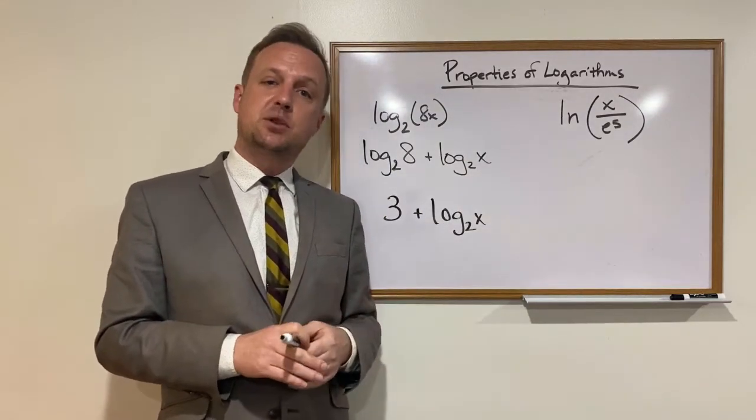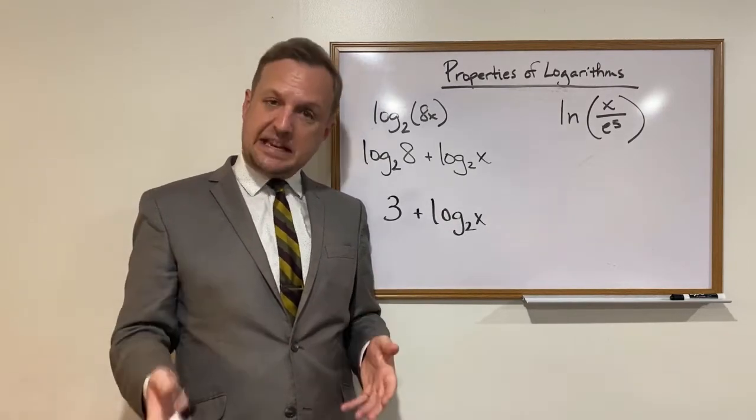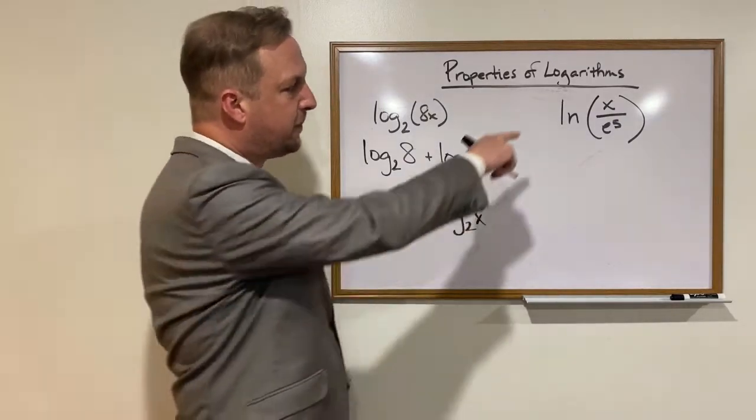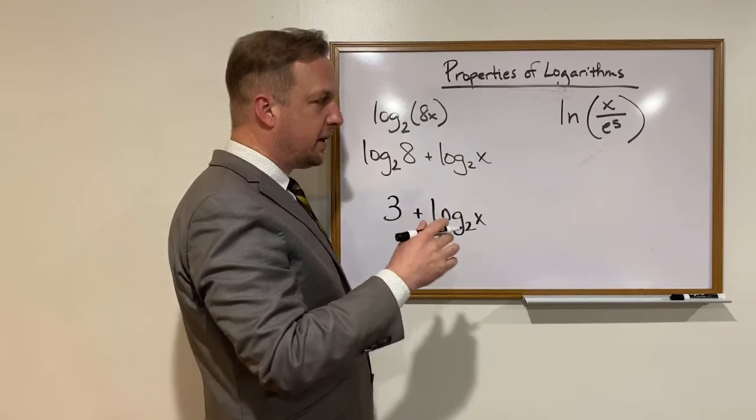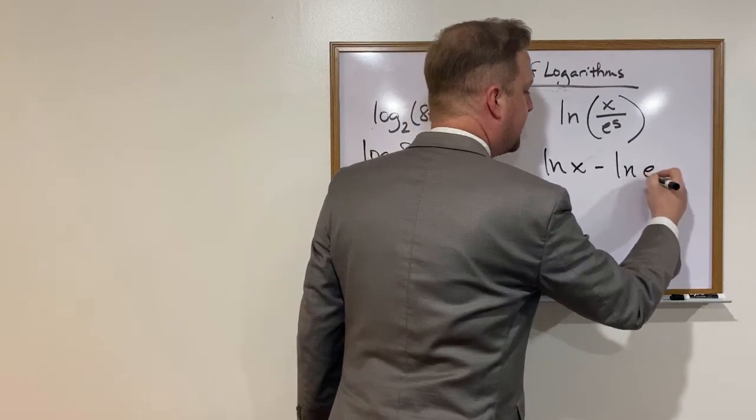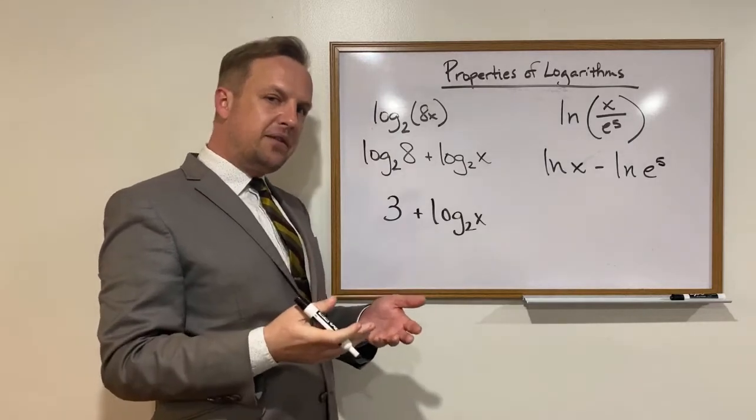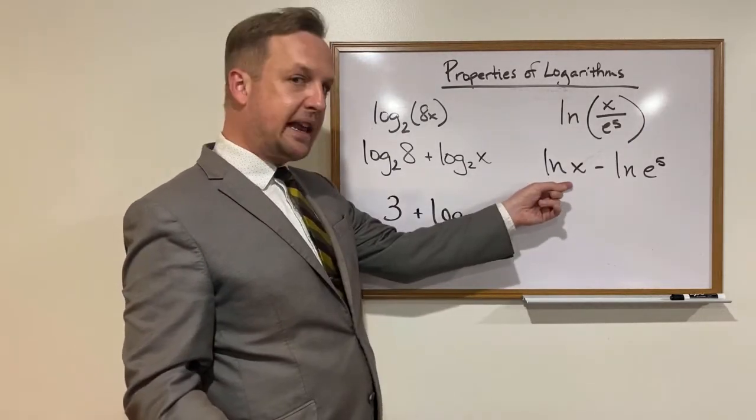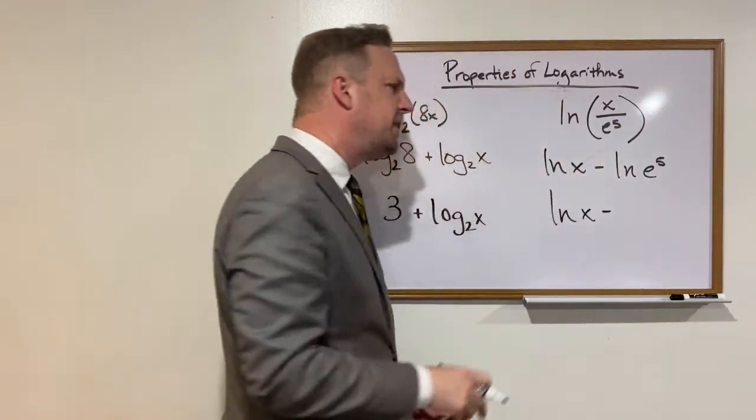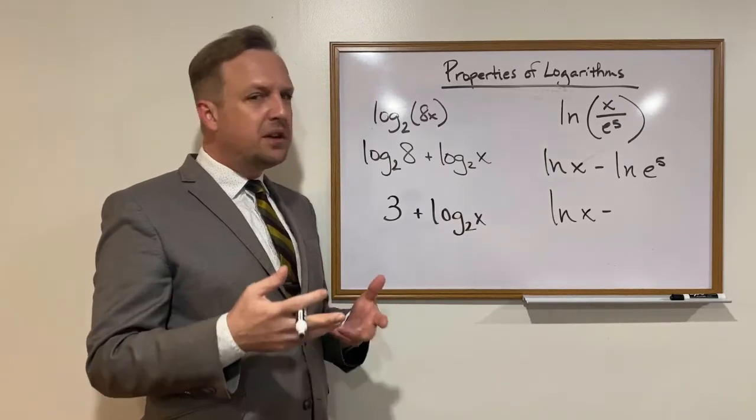Let's take a look at this one. And remember, don't freak out when you see natural logs. Natural logs just mean logs that have a base of e. That's really all that means. And you're going to see how we use that here in a second. So we're going to use the quotient rule here. Just subtract. So that's going to give us the natural log of x minus the natural log of e to the 5th. And again, some of you might think to yourself, my guess is that I can't do anything with this first part. You'd be right. But what about this second part? The natural log of e to the 5th power.